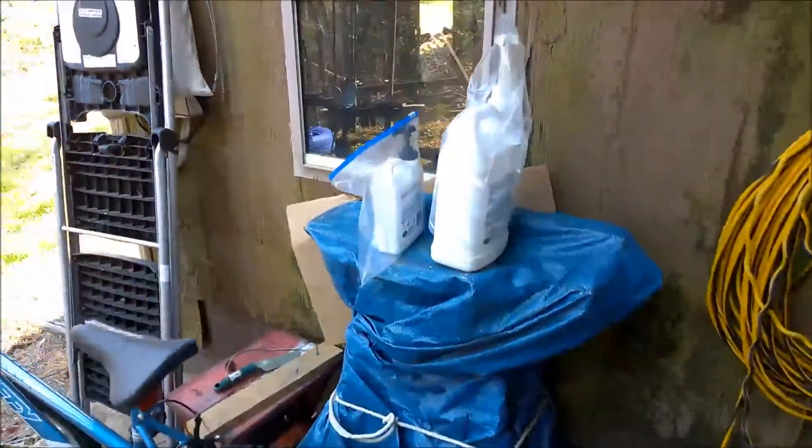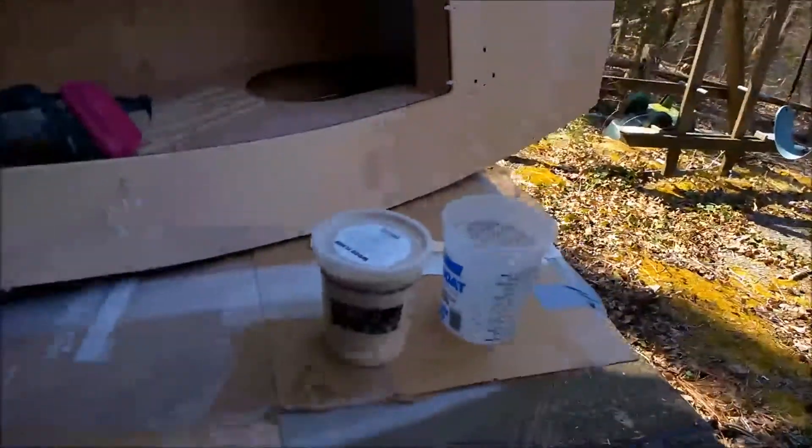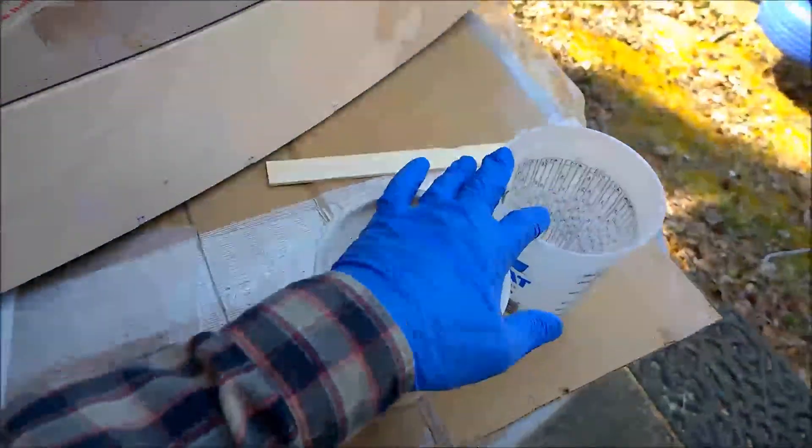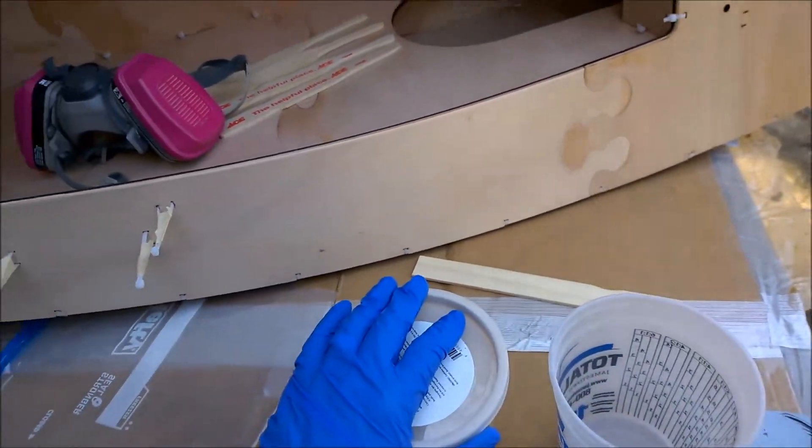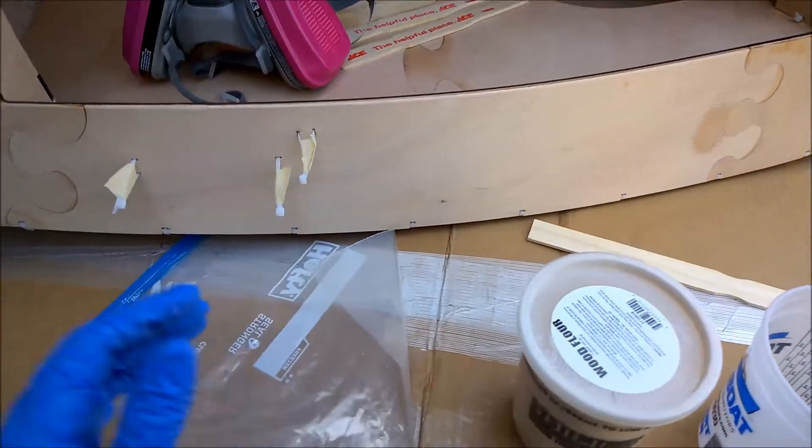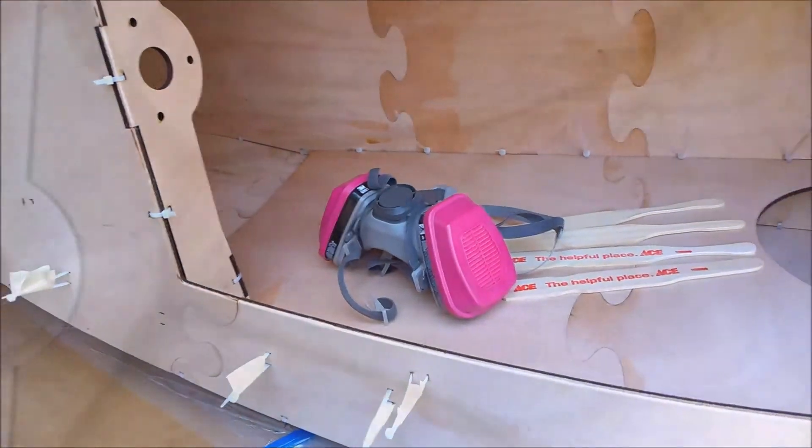I've got the two-part epoxy mix. I did pick up some wood flour so we're going to make some thickened fillet material there and then some ziplock bags to apply it to some of those inside seams.